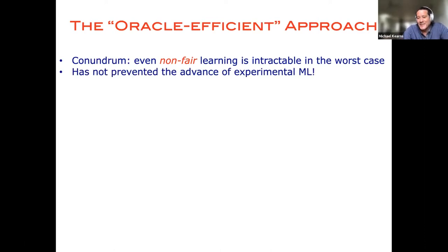Nevertheless, despite the fact that the learning theory literature is littered with negative or intractability results, miraculously, this has not prevented the advance of experimental machine learning, which probably everybody has not been able to avoid hearing about in the last 10 years, with the tremendous successes of things like deep learning and neural networks and the like.